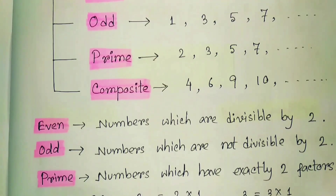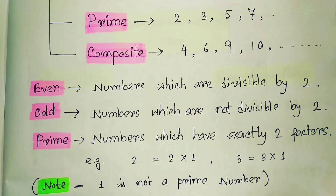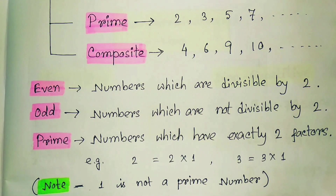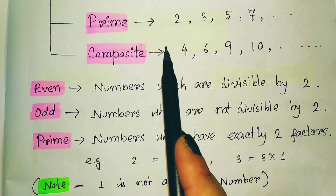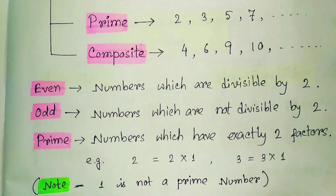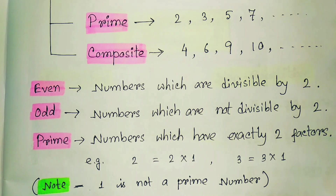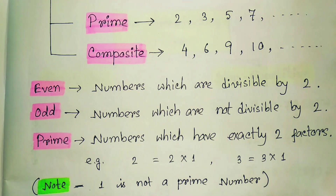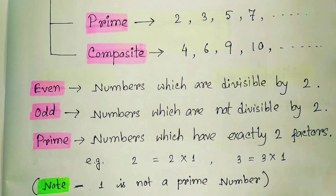Prime numbers are those which have exactly two factors — not more, not less. For example, 2 has factors 1 and 2; 3 has factors 1 and 3. Is 1 a prime number? Definitely no — 1 has only one factor, not two, so 1 is not a prime number.